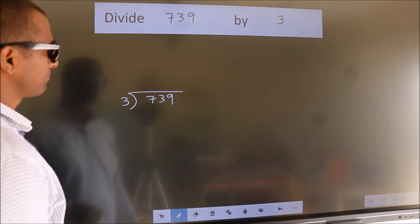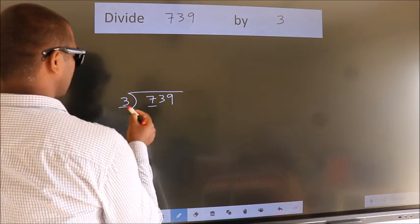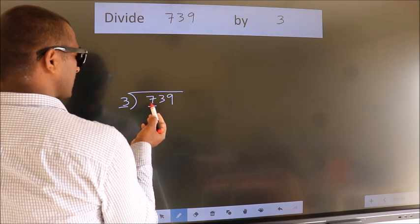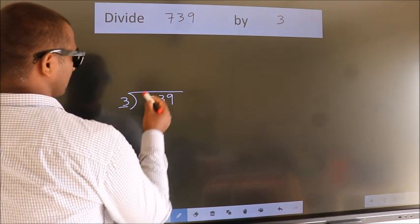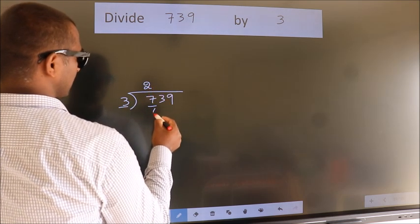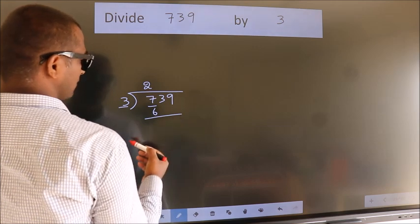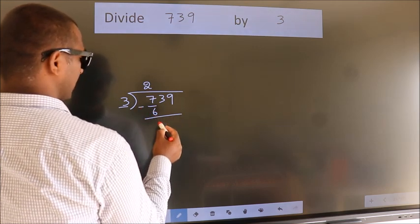Next, here we have 7, here 3. A number close to 7 in 3 table is 3 times 2 equals 6. Now, we should subtract. We get 1.